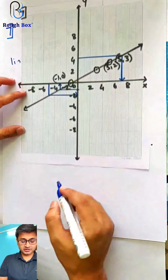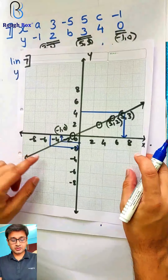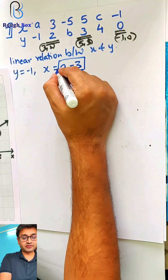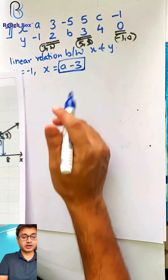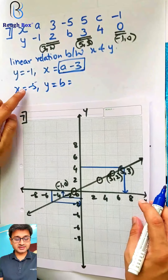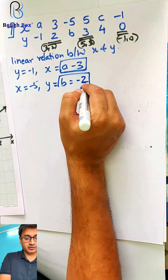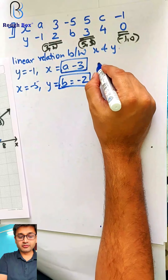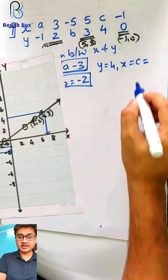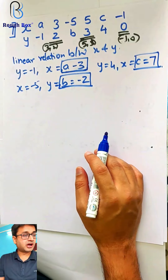How to present: y is minus 1, x is a — we got x as minus 3, so a equals minus 3. Second: x is minus 5, y is b — we got b as minus 2. Third: y is 4, x is c — which is 7. So we got all three coordinates a, b, and c. Graph is done.